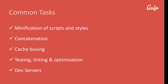Cache busting, which has to do with letting the browser know if there's a new version of a cached file. Testing, linting, error checking — all those helpful debugging tasks, Gulp can handle that. There's even a web server plugin so that we can run our code on a development server. These are just a few of very many tasks and plugins that are available.